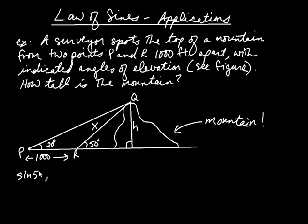right? We have that this length is 1,000 and we have that angle being 20. So I'm going to write down, if I call this length x, I don't know that length yet, but I know that sine of 50 degrees is the opposite over the hypotenuse, right? So it's H over X. Let's write that down. Sine of 50 degrees is H divided by X.